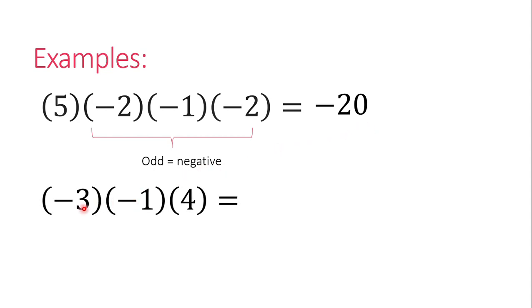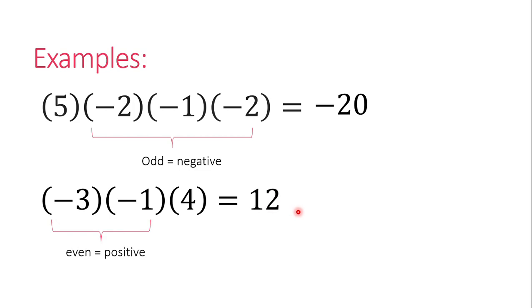Another example: negative 3 times negative 1 times 4. Count the number of negative integers: 1, 2. Since 2 is an even number, the sign for the product should be positive. So negative 3 times negative 1 times 4 equals positive 12. That is the rule when we multiply three or more factors.